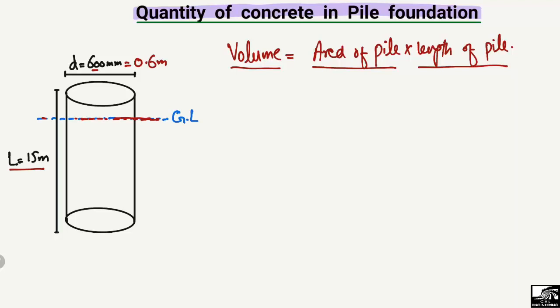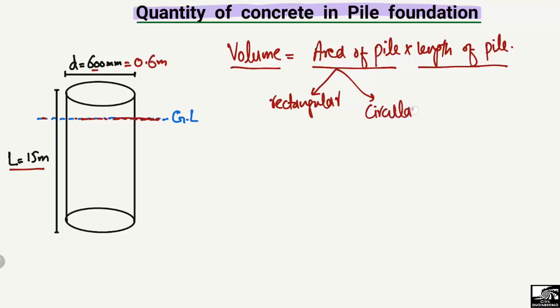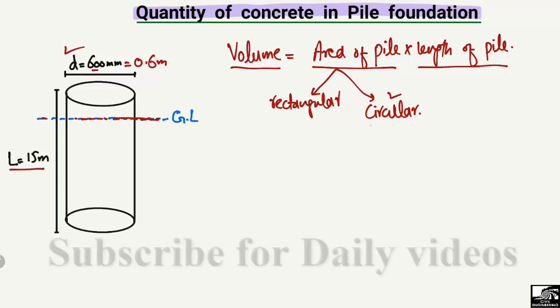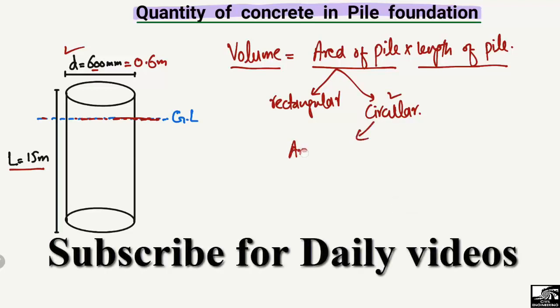The area of the pile depends on its shape — it could be a circular pile, a rectangular pile, a trapezoidal pile, or an elliptical pile. Rectangular piles are not most commonly used; the most commonly used is the circular pile. Here we have a circular pile because we are given the diameter of the pile.